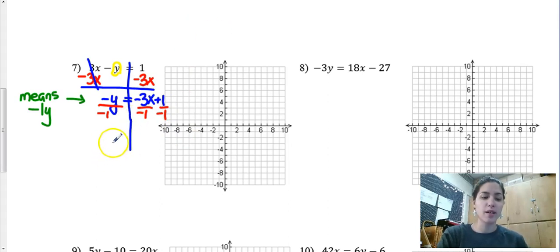Keep my line going a little bit. So now I have y equals negative divided by negative is positive. Positive 1 divided by negative 1 is negative 1.